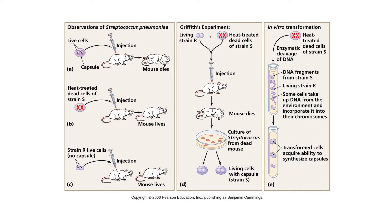He took heat-killed S strain and injected them into mice, and the mice did not get pneumonia and did not die. Then he designed a very important experiment: he took R strain bacteria that don't cause pneumonia and heat-killed S strain bacteria that don't cause pneumonia, and he injected them together into mice. Interestingly, the mice actually got pneumonia and they died.